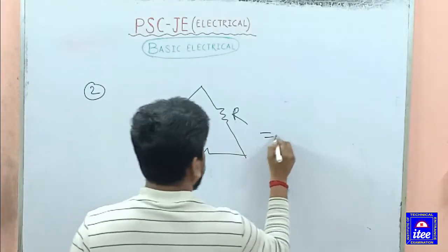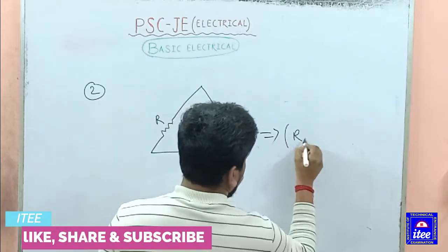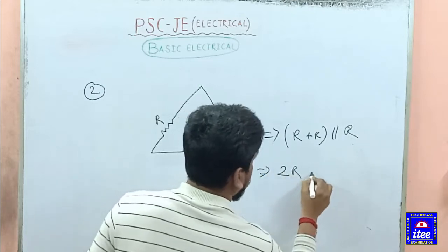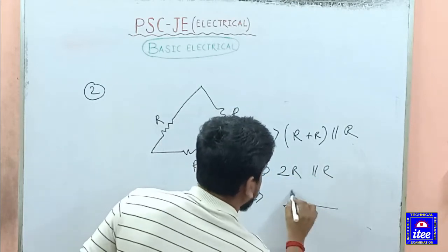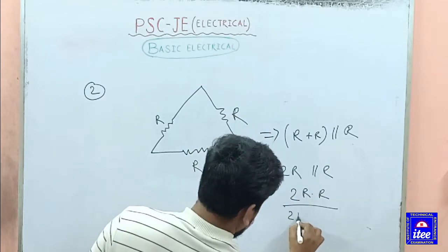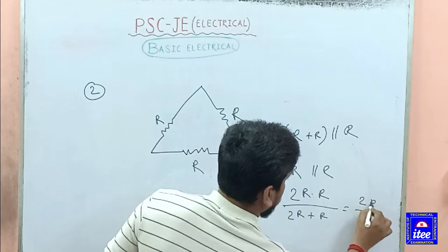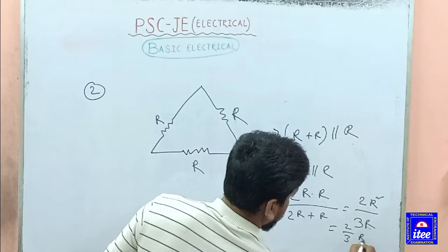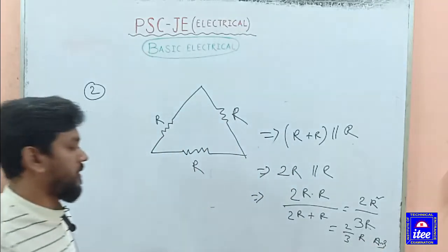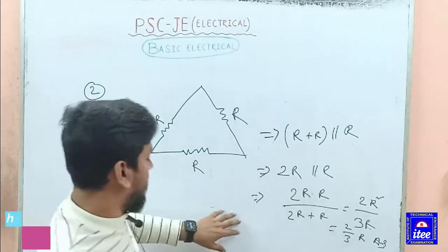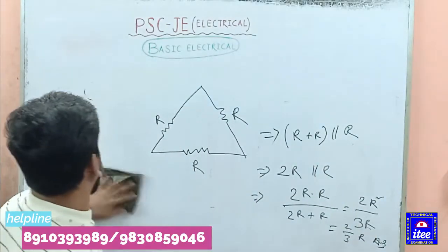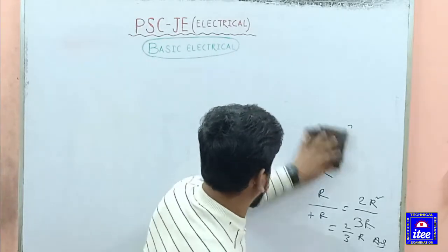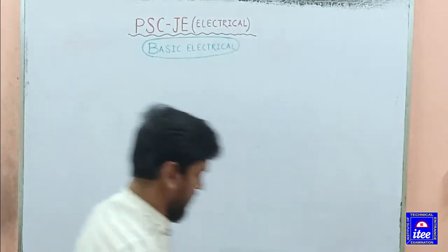It can be two resistors in parallel: 2R into R divided by 2R plus R, giving 2R squared over 3R, which simplifies to 2R/3. The same question: what is the relation of the length of the insulation resistance?